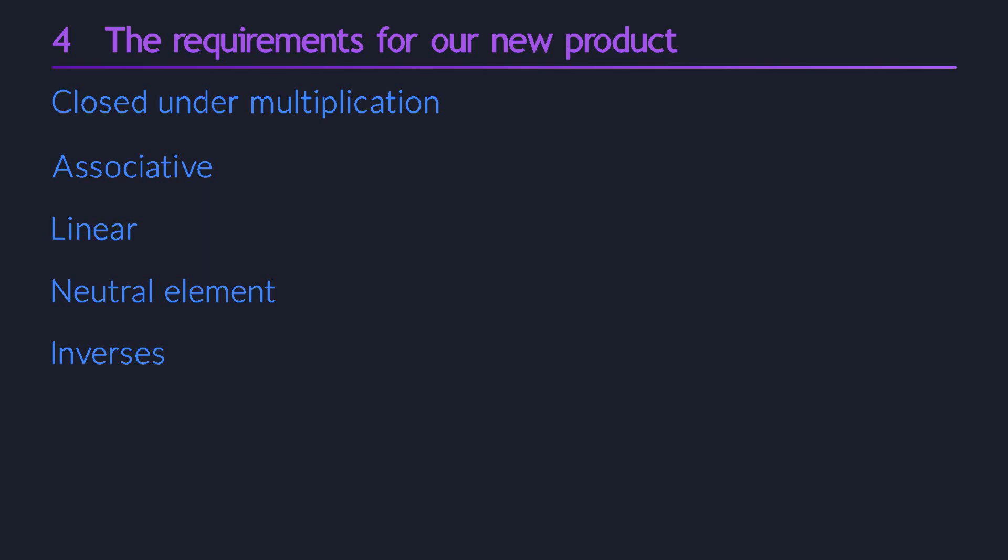One extremely important demand is linearity. This means that the product preserves linear combinations. Whenever you replace one of the inputs by a linear combination, you should get the same linear combination of the individual outputs. If you stare at this formula closely, you will see that it's actually a kind of distributivity. This is going to be crucial for everything that follows because it allows us to break a geometric product into smaller pieces. As soon as we have defined pairwise products between all the basis vectors, we can then use linearity to construct all other products for any pair of vectors. So this one is a big deal.